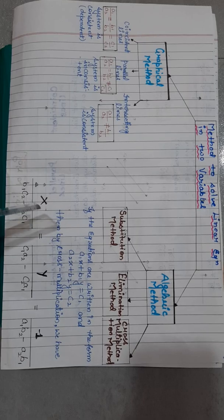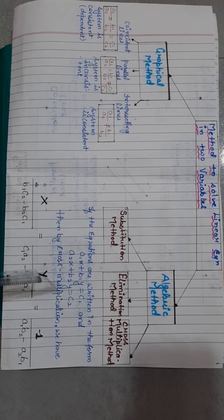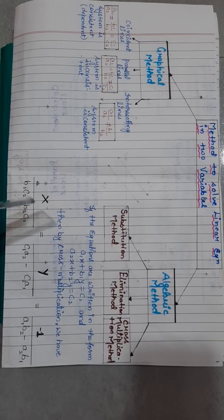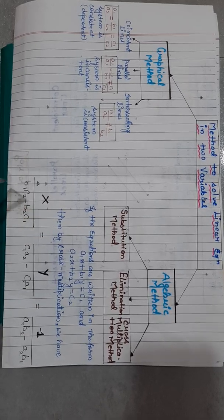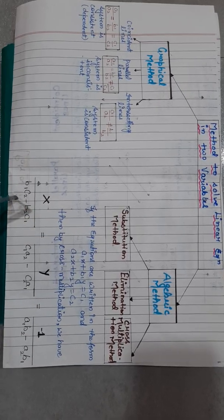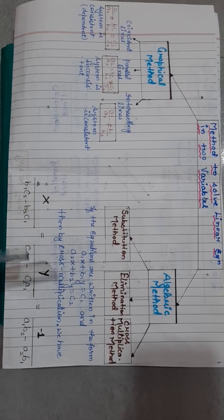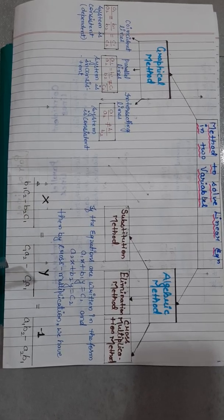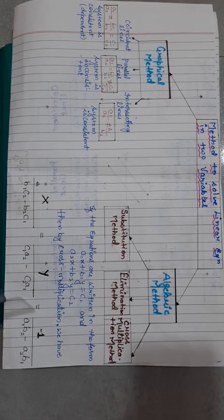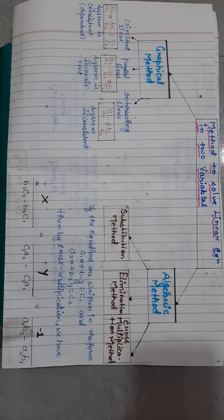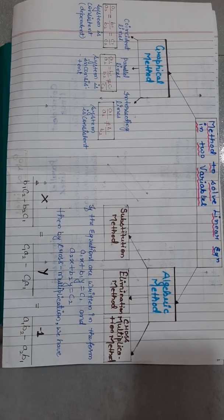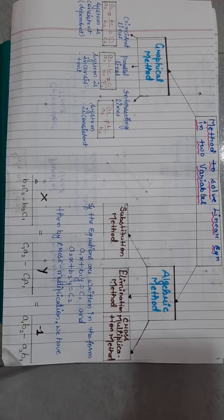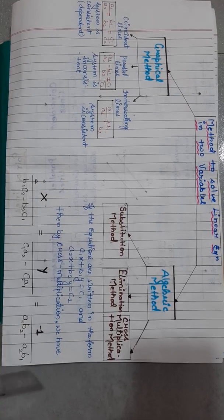First we write x, y, and minus 1. x upon b1c2 minus b2c1, y upon c1a2 minus c2a1, and minus 1 upon a1b2 minus a2b1.